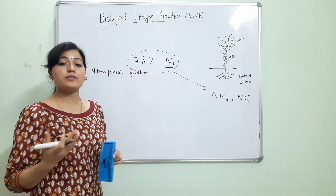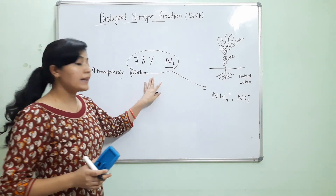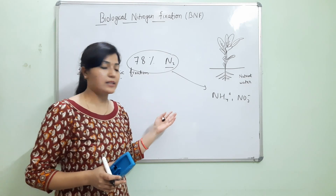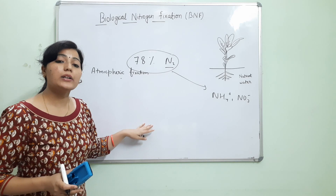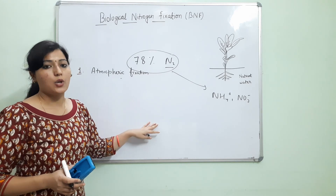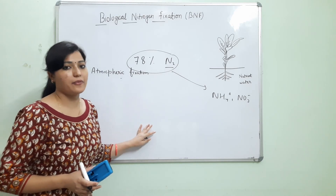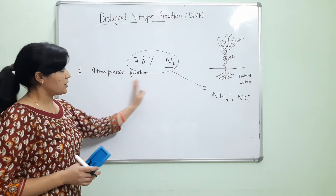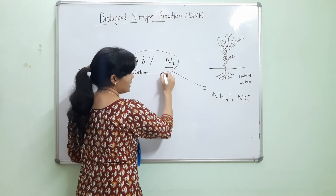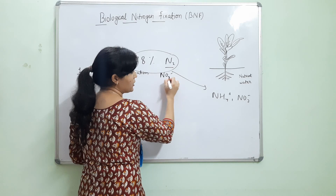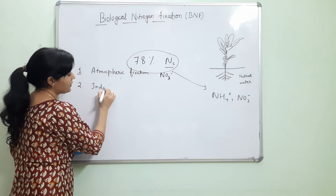Atmospheric fixation means the atmospheric nitrogen reacts with oxygen to make nitrous oxide, which further reacts with water and converts to nitrous acid or nitric acid. This then reaches the earth's surface in the form of acid rain, providing nitrogen in the nitrate form to the soil. The next one is industrial fixation.